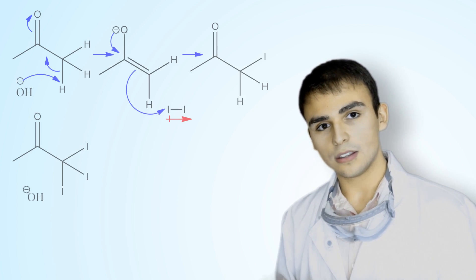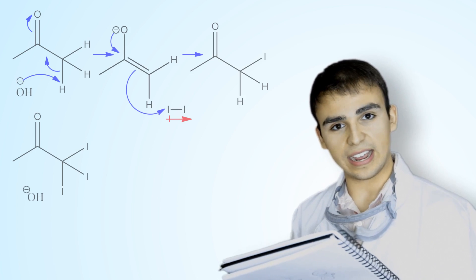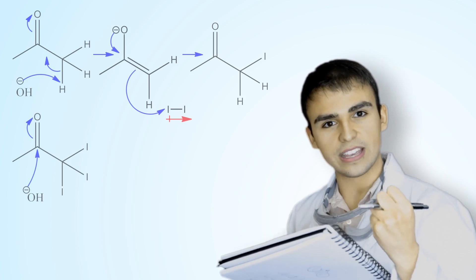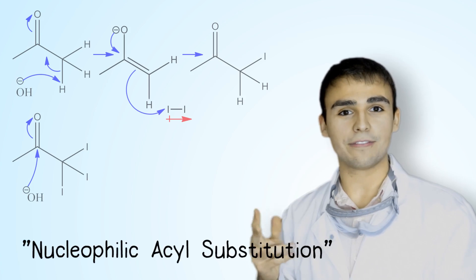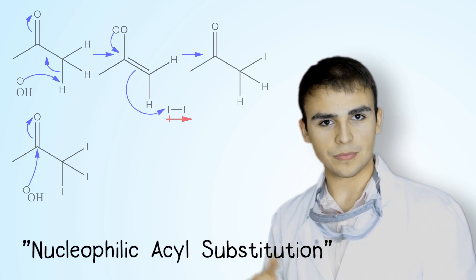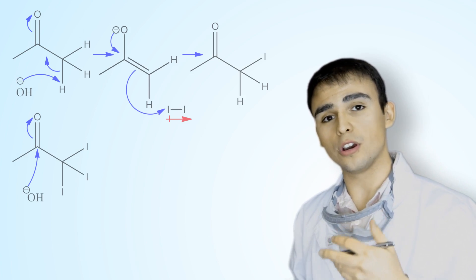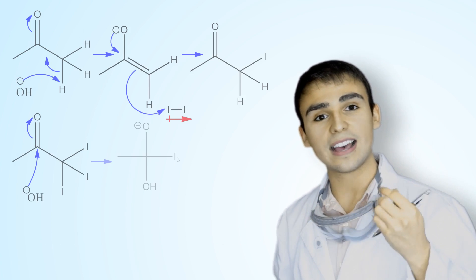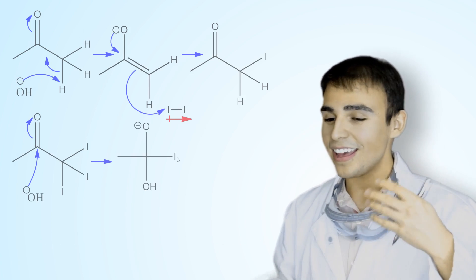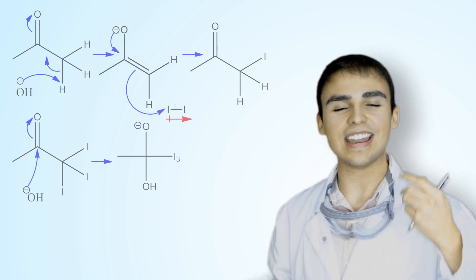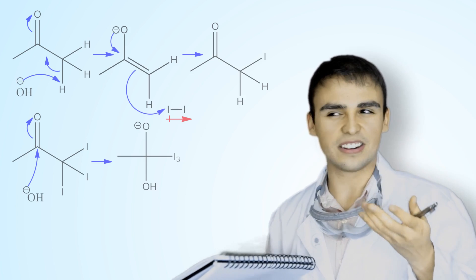Ultimately, we're going to have that hydroxide anion attack that carbonyl carbon in a process known as nucleophilic acyl substitution. That will then yield what's known as a tetrahedral alkoxide intermediate. That's not particularly stable, having the negative charge on the oxygen.